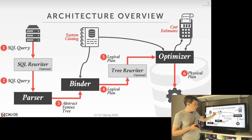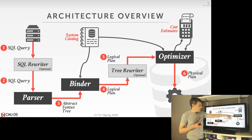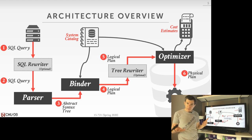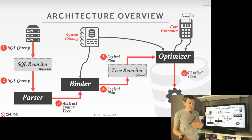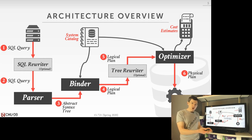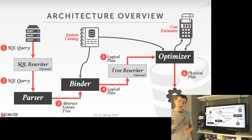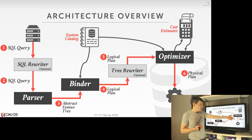The tree rewriter applies heuristics to manipulate the structure of the tree for optimizations we always want to do without needing to estimate cost — like predicate pushdown, or rewriting view queries and CTEs into nested queries. Then we feed this into the optimizer, where we're focusing on a cost-based query optimizer that uses cost estimates based on statistics collected from the database to predict what's the execution time of a particular query plan.